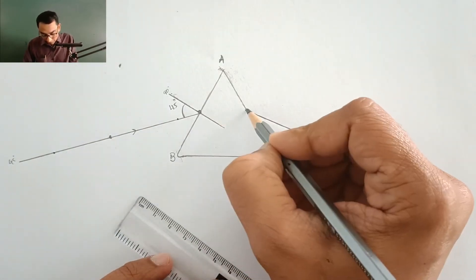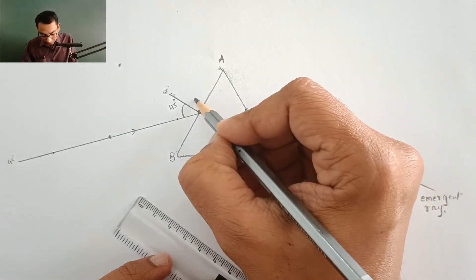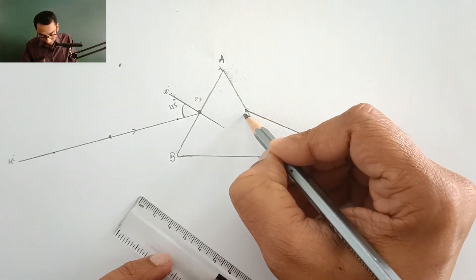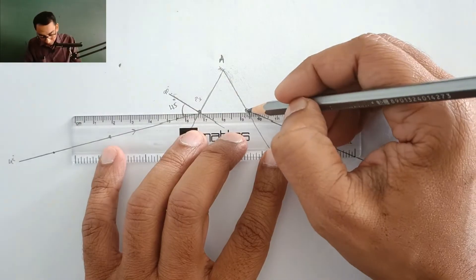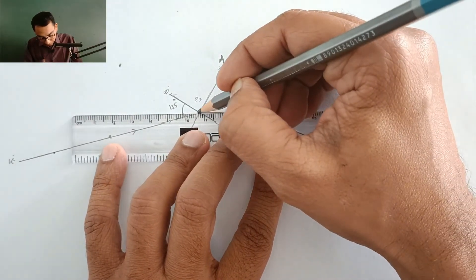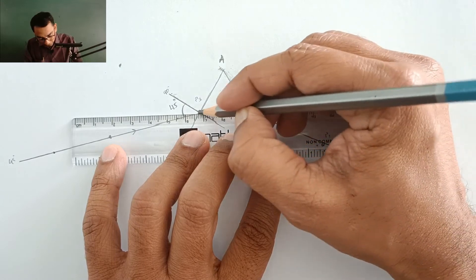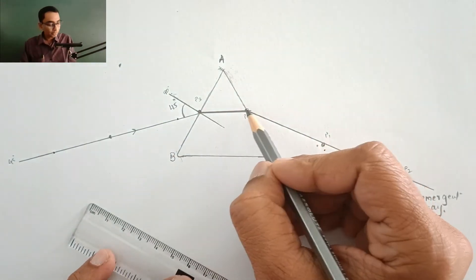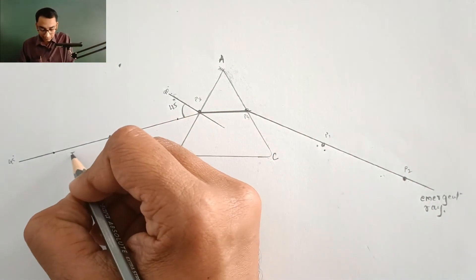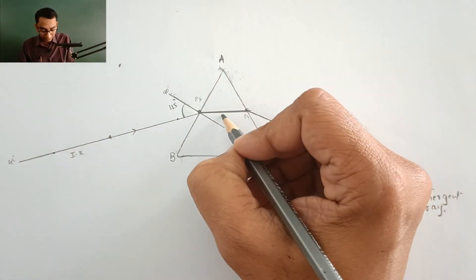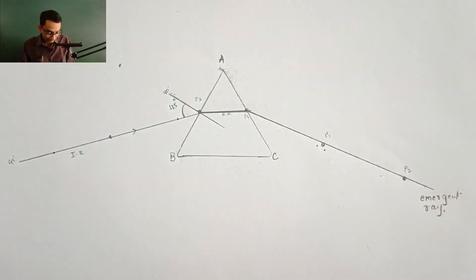This is going to be my emergent ray. Now I am going to join these two points, this is point P3 and this is point P4. This is going to be my refracted ray. This is incident ray, this is refracted ray, this one is the emergent ray.